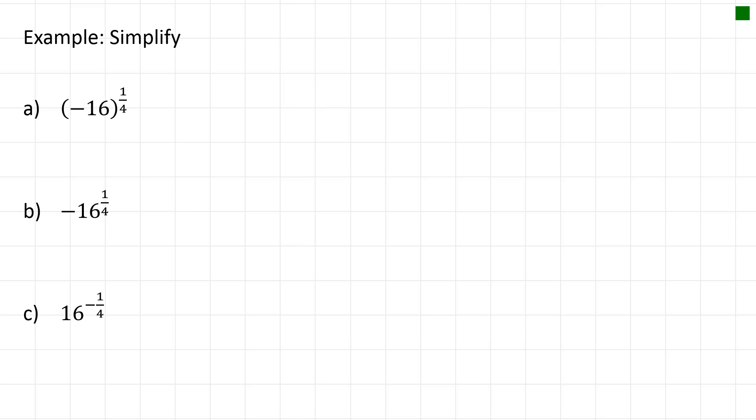So now if we have a problem where we're asked to simplify something with a fraction exponent, we can solve these problems by rewriting as a radical. So negative 16 to the power of 1 over 4, I can rewrite this as the fourth root of negative 16. And because negative 16 is in the brackets, it must be all within the radical.